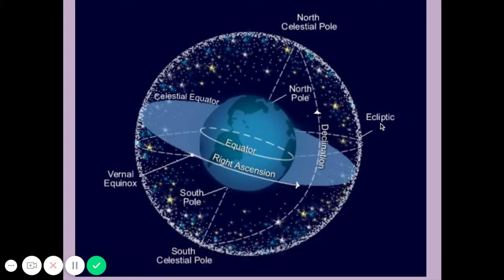Another term is the ecliptic. If you took all the planets and set them on a table, that table would represent the ecliptic — it's the plane or flat surface on which they all revolve. Earth is tilted 23.5 degrees from that ecliptic due to an early impact in its history. Constellations on the ecliptic are called the zodiac constellations — like Gemini, Aries, and Libra. There's no scientific connection between horoscopes and constellations; that's just a human fabrication, but they're fun to look at.